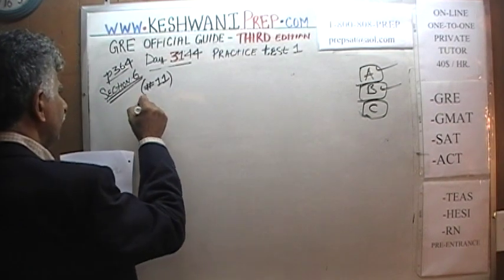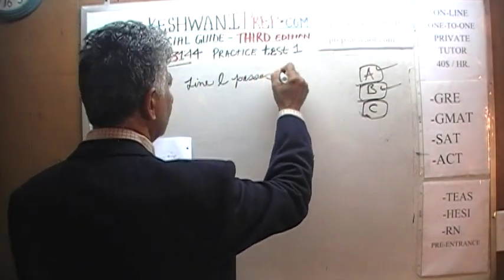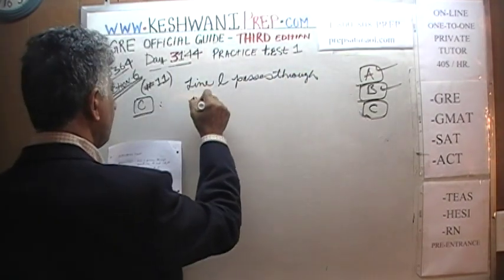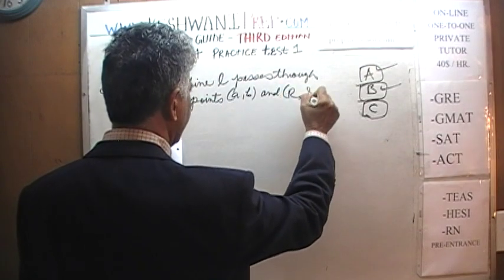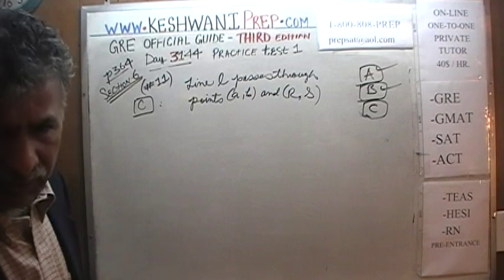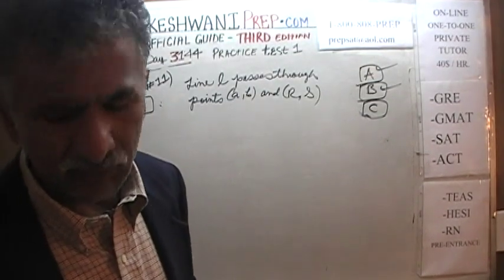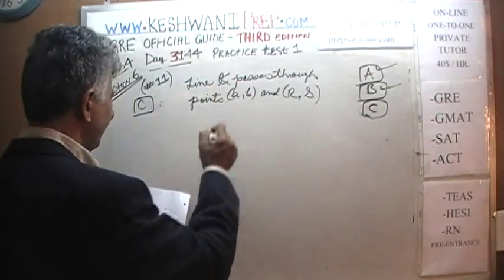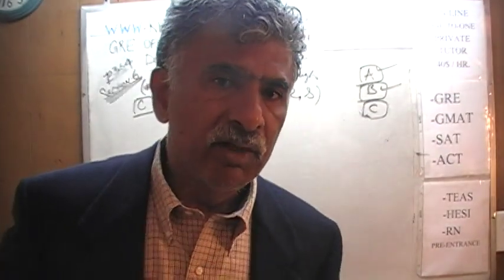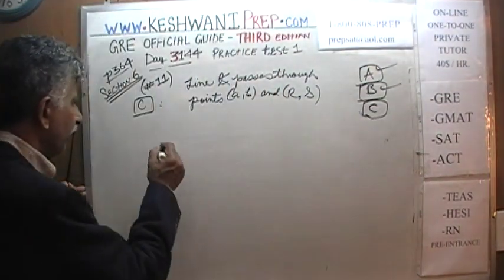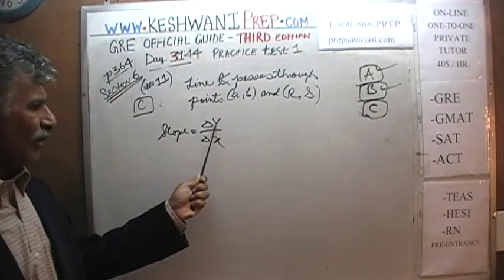Statement C says that line L passes through points (A, B) and (R, S). Don't make a fuss about calling it line L versus line K — it's still the same line. How do we find the slope? When we are given the coordinates of two points the line goes through, the slope is simply the change in Y coordinate over the change in X — it tells us how much Y changes for a given change in X.